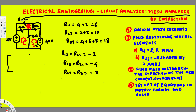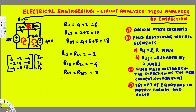Now we put these values in matrix form. The diagonal elements R11, R22, R33 go in the first row first column, second row second column, and third row third column. The shared resistances go in their respective off-diagonal positions: R12 in row one column two, R21 in row two column one, R13 in row one column three, R31 in row three column one, R23 in row two column three, and R32 in row three column two.